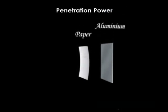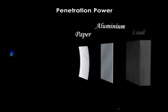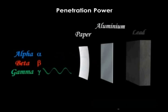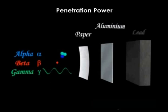Penetration power. The three radioactive emissions have different penetration powers. Alpha particles are the weakest — they travel slowly through air and are stopped by a sheet of paper. Beta particles are stronger — they penetrate paper but are stopped by a piece of aluminium foil. Gamma rays have the highest penetration — they penetrate paper and aluminium foil and are only stopped by a thick lead block.